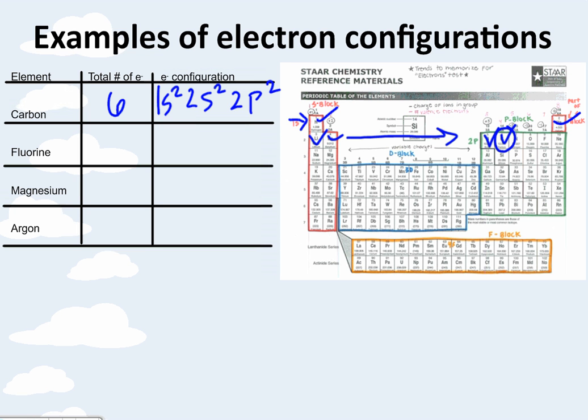Let me try fluorine for you. Fluorine has 9 electrons. It's a little further down than carbon, so we have to go further. So again, 1s², 2s², but then we're in 2p, and we don't stop at 2. We go 1, 2, 3, 4, 5. So my exponent is a 5. Something important to note here is your exponents should add up to the total number of electrons in the atom. So 2 plus 2 plus 5 gives us 9. Try magnesium and argon on your own time, and check the key online to see if you did it right.